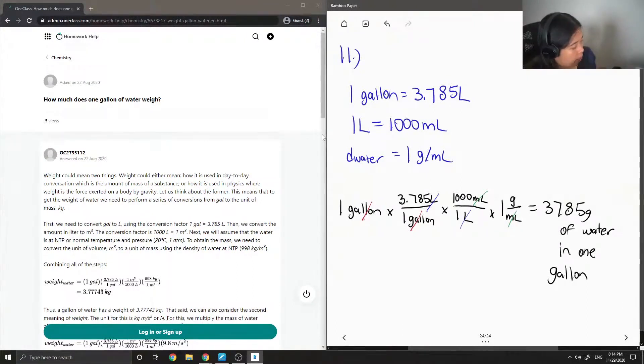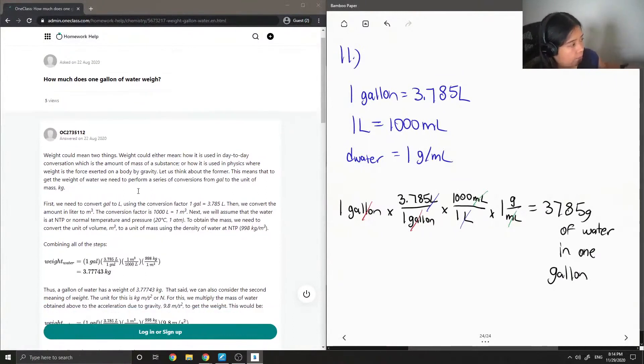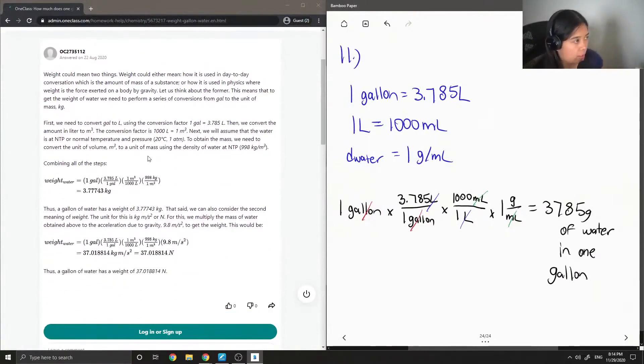Okay, so let's see what the junior tutor said. Weight could mean two things. It could either mean how it is used in day-to-day conversation, which is the amount of mass of a substance, or it is used in physics where weight is the force exerted on a body by gravity. Let's think about the former. This means that to get the weight of water we need to perform a series of conversions from gallons to the unit of mass, which is kilograms.